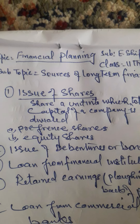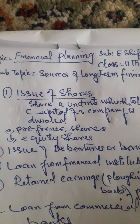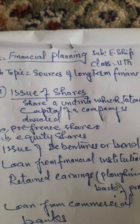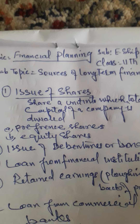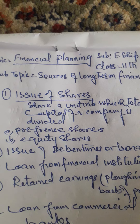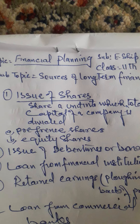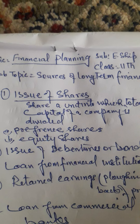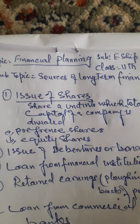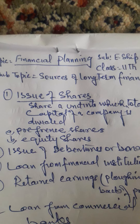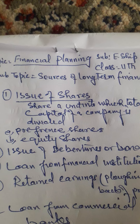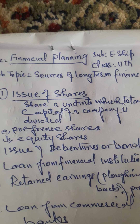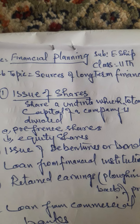The fourth source is retained earnings — it is a very important source. Retained earnings is also known as ploughing back of profit. When the business earns profit, it keeps some profit unspent and invests it back in the business. The part of profit which is not distributed among the shareholders as dividend but is retained in the business for future use is known as retained earnings, also called self-financing. It is an important source of internal, long-term finance.